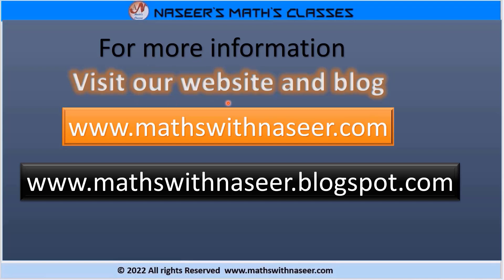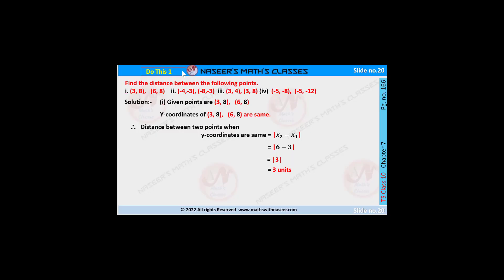For more information, visit our website and blog www.mathswithnaseed.com. Do this page number 166, chapter 7, coordinate geometry. Find the distance between the following points. Here 4 bits are given.